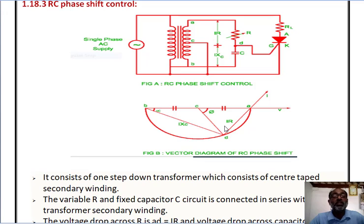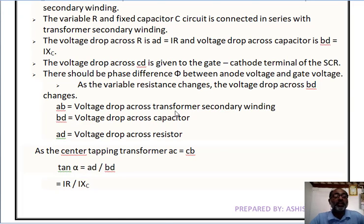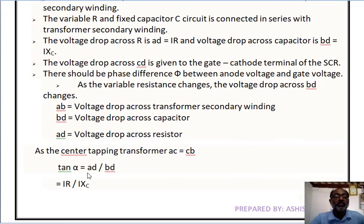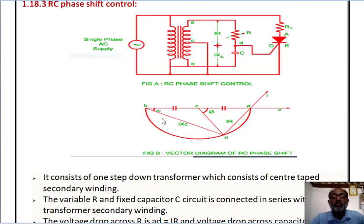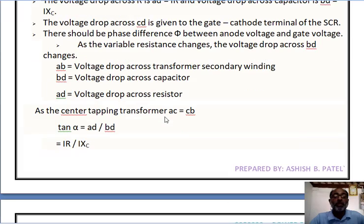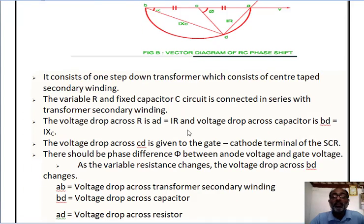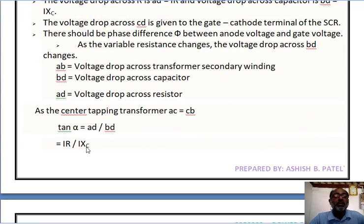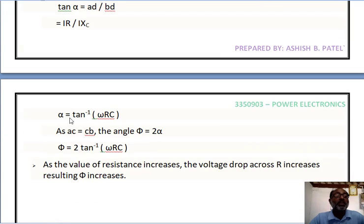We are using center tape transformer, so we can write AC = CD or BC. Here we can write tan α = AD divided by BD, which equals IR divided by IXC. I cancels, so α = tan⁻¹(ωRC), which is tan⁻¹(2πfRC). Similarly, ωRC.